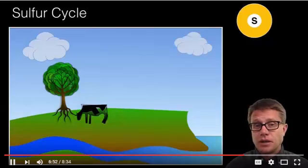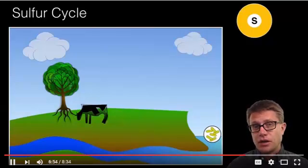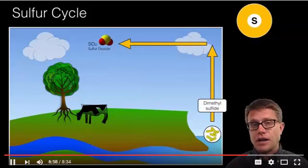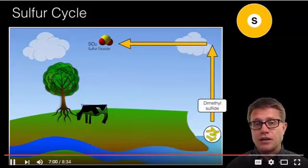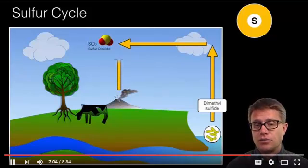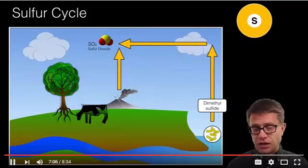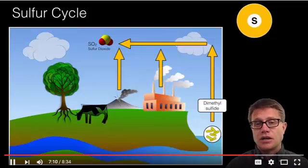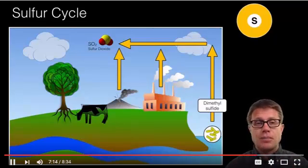And then finally we have the sulfur cycle. The sulfur cycle is going to move from the oceans the sulfur. We have bacteria that are going to convert that into dimethyl sulfide which eventually becomes sulfur oxide or sulfur dioxide. We can also increase sulfur dioxide through volcanism. So volcanoes are releasing hydrogen sulfide which becomes sulfur dioxide. And then factories are going to release sulfur dioxide as well. It is in the atmosphere now. How does it get back to the planet?